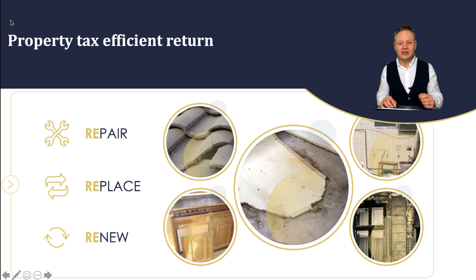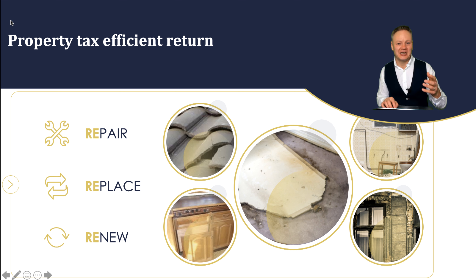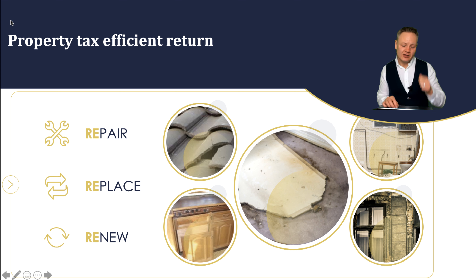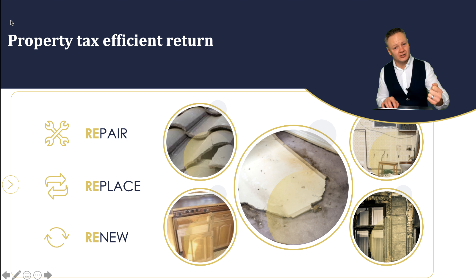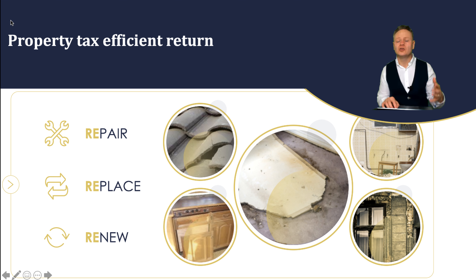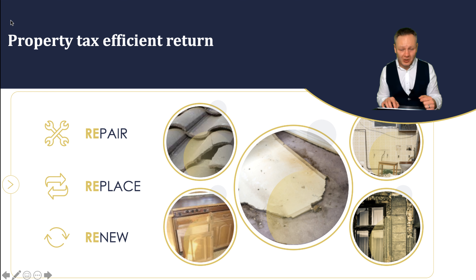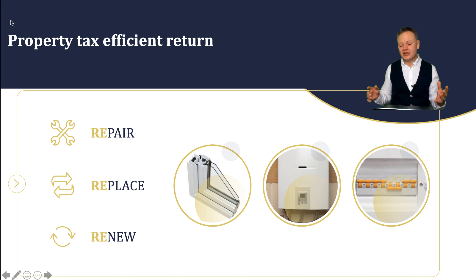Bear in mind that HMRC guidance says the property needs to be in a lettable condition. A useful 'get out of jail free' card here is having a buy-to-let mortgage, because a term of the mortgage states that the property must be in a lettable condition. That proves to HMRC that it is in a lettable condition and that any works are just to improve it to generate more income — therefore all of those costs may be offset against property income to reduce your tax liability.